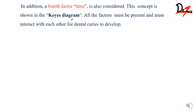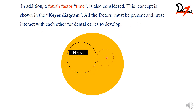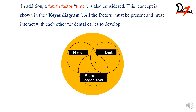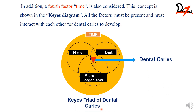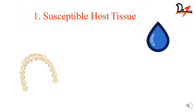This concept is shown in the Keyes Triad diagram. The factors we need are: first, the host and diet — sweet food — whose interaction occurs next in the presence of microorganisms. In the presence of time, that is the time of exposure, this is the common area where all interactions take place, and that forms the dental caries. This is called the Keyes Triad of dental caries.